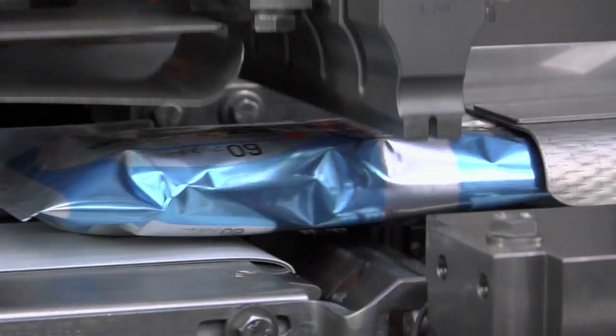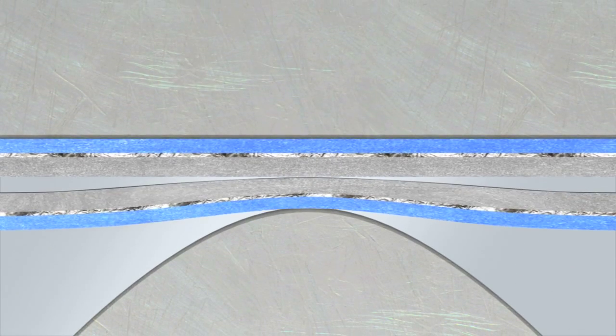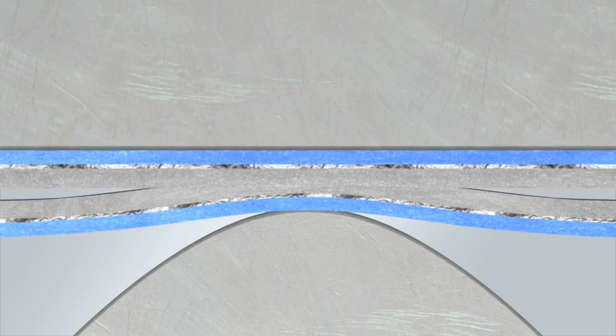Ultrasound vibrates with an amplitude from 20 to 40 microns at a frequency of 20 or 35 kilohertz. Ultrasonic sealing melts the material extremely quickly in the correct position.